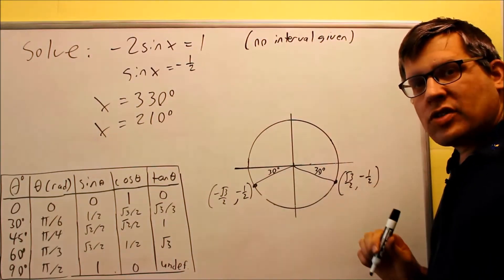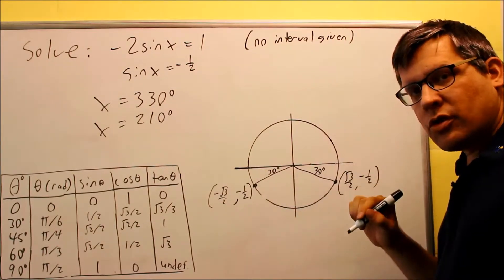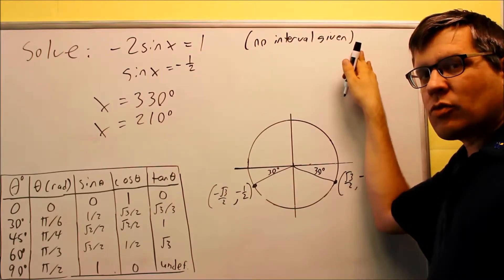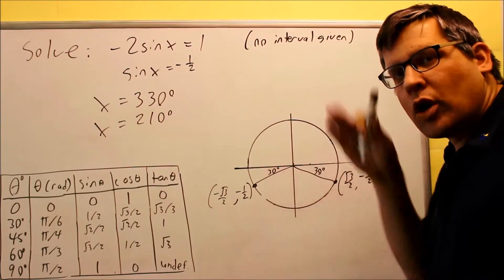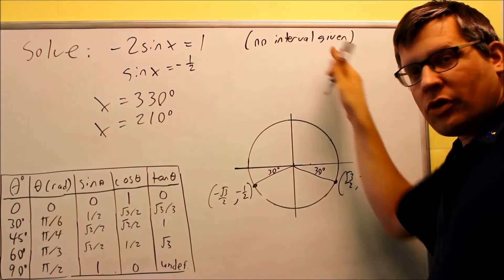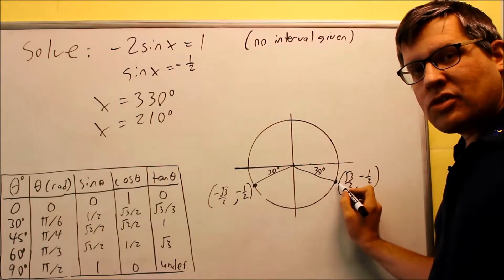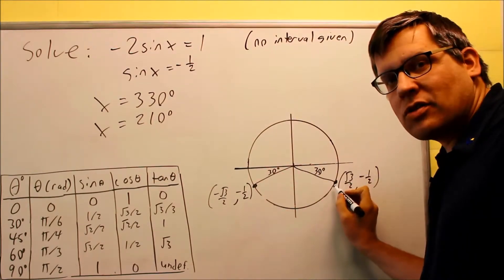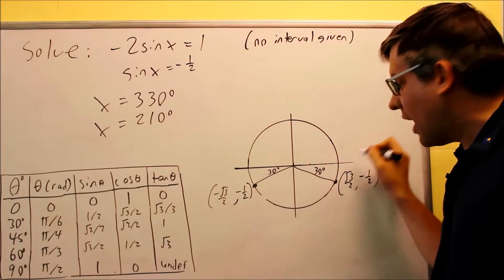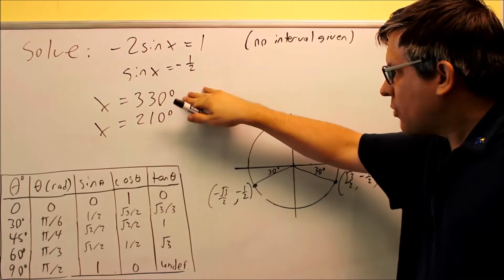Now if there's no interval that's given, we have to account for all the solutions all the way around the multiple revolutions. Because there's no interval, basically we're not just confining it to one revolution on the unit circle from 0 to 360. There's no interval, that means my answer could be here, but if I add 360, I'll come back to the same spot, add another 360, back to the same spot, keep going around the whole circle like that, I'll have multiple answers.